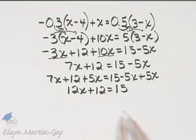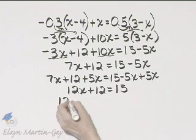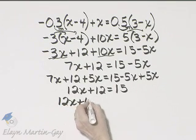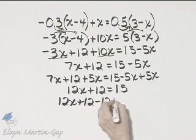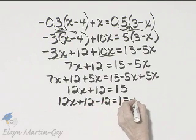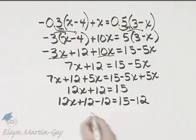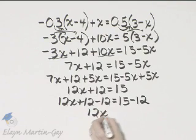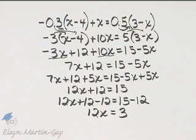And now let me subtract 12 from both sides. So the left side, 12x plus 12 minus 12 is equal to 15 minus 12. The left side is 12x, the right side is 3.